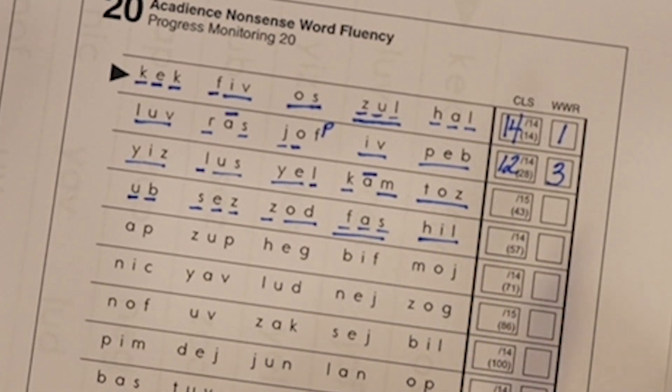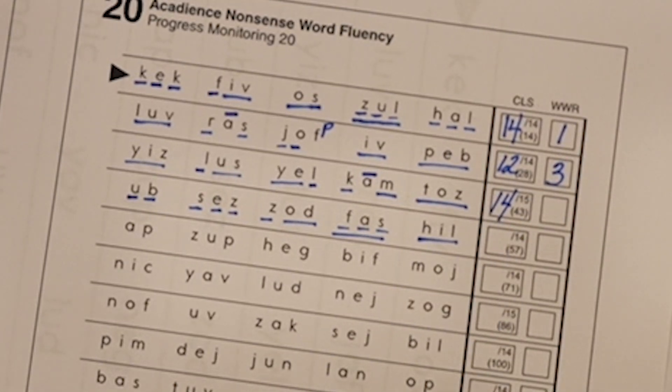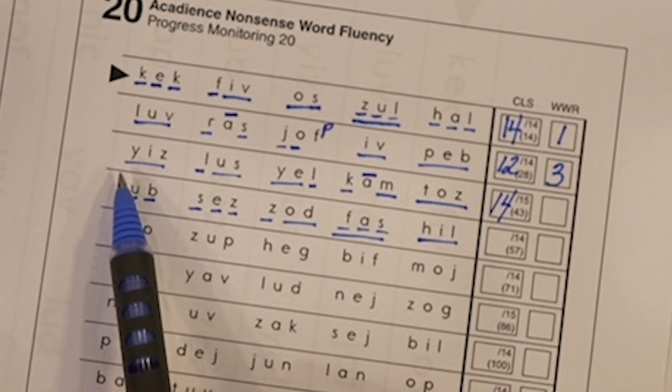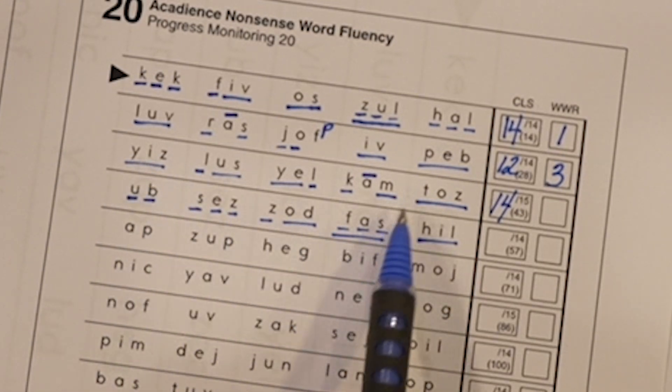How many were there any mistakes? Oh, one. So I had a total of 15 possible sounds and I missed one. Not bad. And then how many words did I read the whole word the first time? One, two.